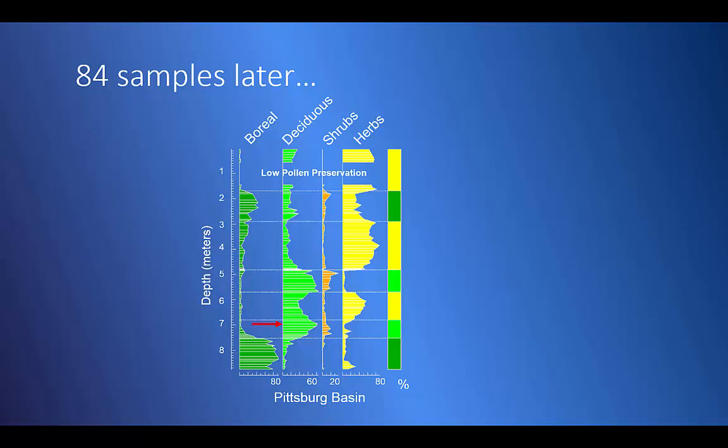By the way, here's that sample we saw on the previous slide from 695 centimeters. It's just one point out of 84 on each of these graphs. This is a summary diagram. I've lumped the types into categories.